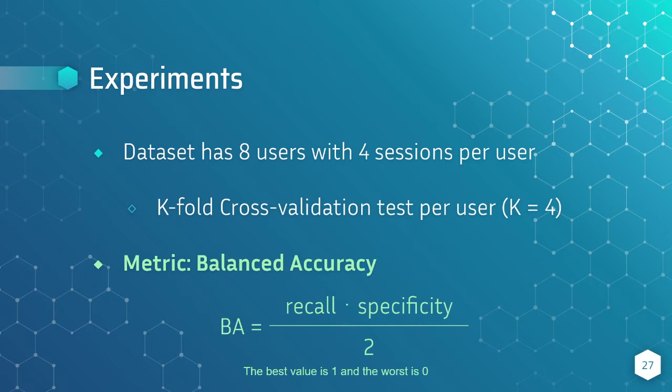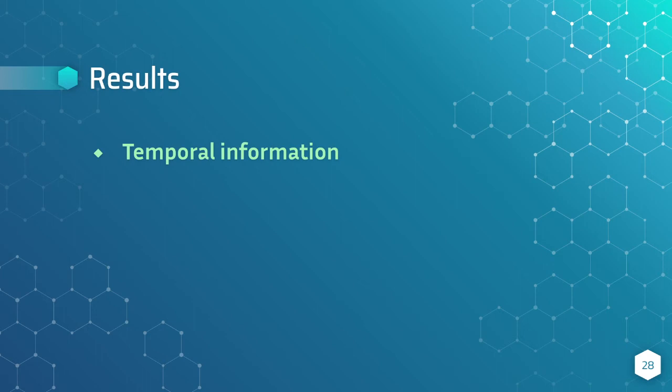The metric that we use is balanced accuracy. But why not use standard accuracy? Because the dataset is imbalanced. It has five non-target images versus one target image. So we want to avoid a model that predicts 83% accuracy just by predicting the prior.